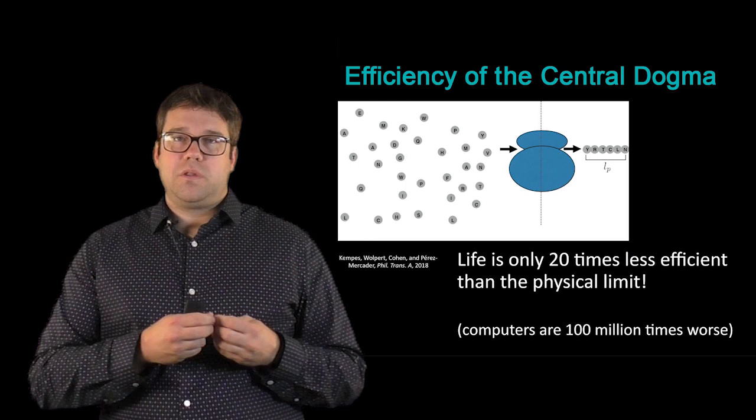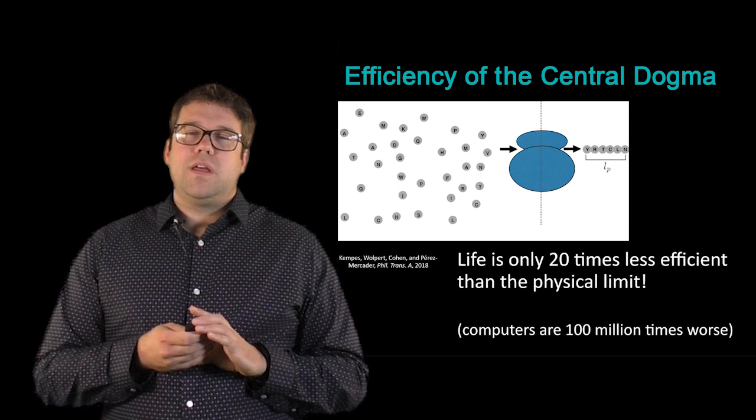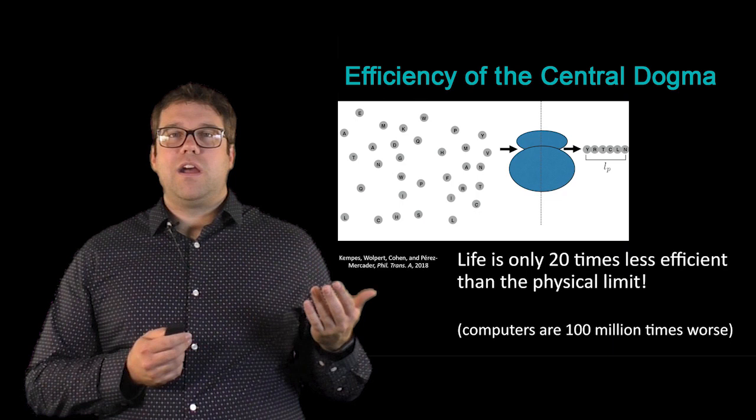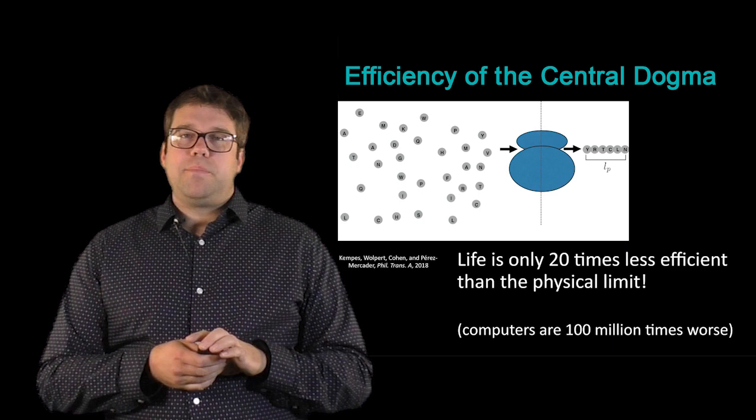What we find, if we consider how many ATP are used to polymerize a single amino acid in total, is that life is about 20 times less efficient than the physical limit. Now this may sound a lot, 20 sounds like a big number, so the question is, does that mean we're very close to Landauer's Bound or very far away? For reference, modern human computers are about 100 million times worse than Landauer's Bound. So life is doing a much better job, specifically the ribosome is doing a much better job than even the best computers that we've made at performing this abstract computation of string writing.